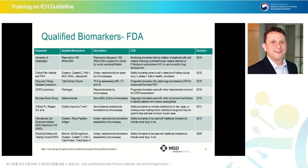In 2015, the MYCOSIS study group qualified galactomannan by serum bronchoalveolar lavage fluid by immunoassay. The context of use was as a diagnostic biomarker used with other clinical and host factors to identify patients with invasive aspergillosis. In 2016, the COPD consortium qualified fibrinogen in the plasma by immunoassay as a prognostic biomarker to enrich for COPD exacerbation. Also in 2016, the polycystic kidney disease consortium qualified total kidney volume as assessed by MRI, CT, and ultrasound as a prognostic biomarker with patient age and baseline glomerular filtration rate for autosomal dominant polycystic kidney disease.